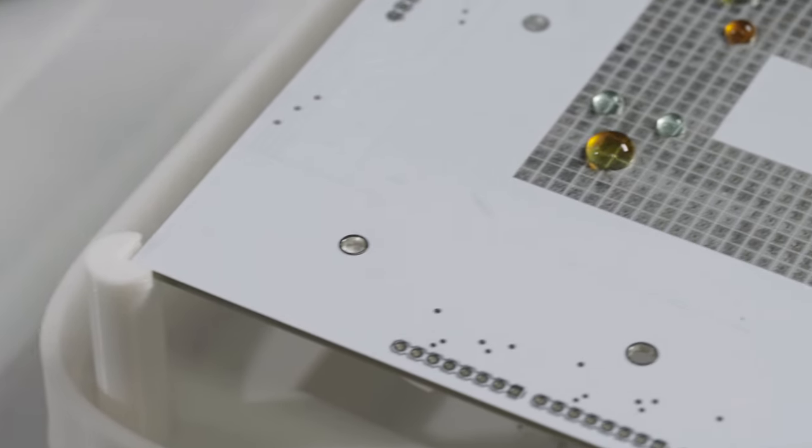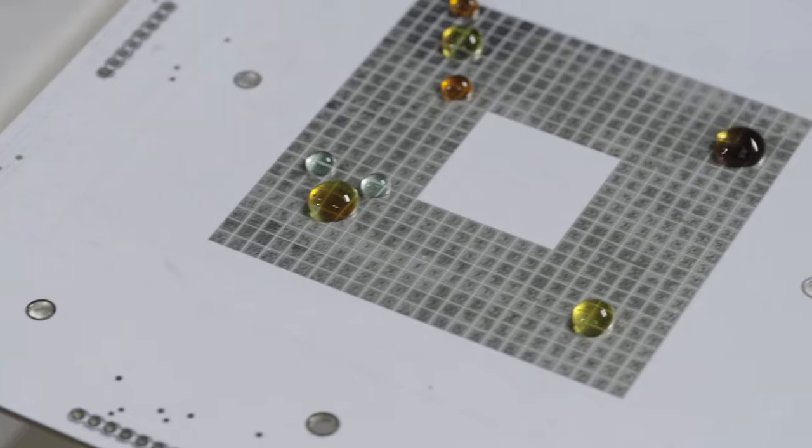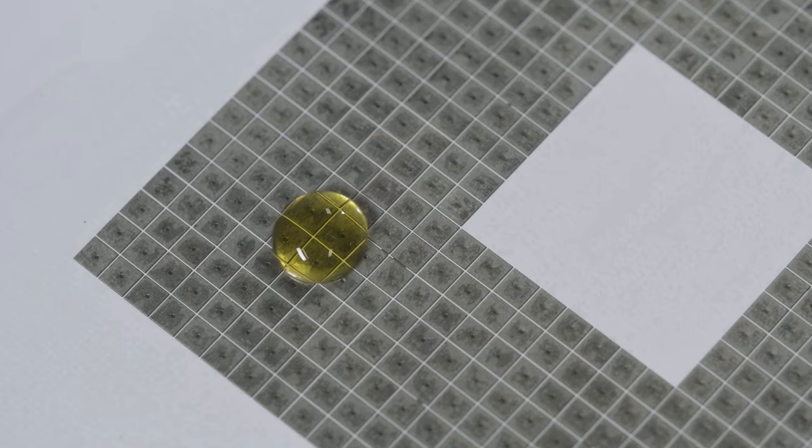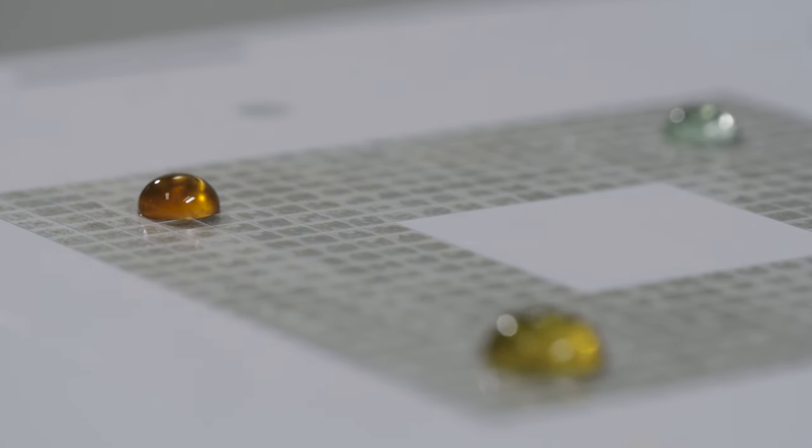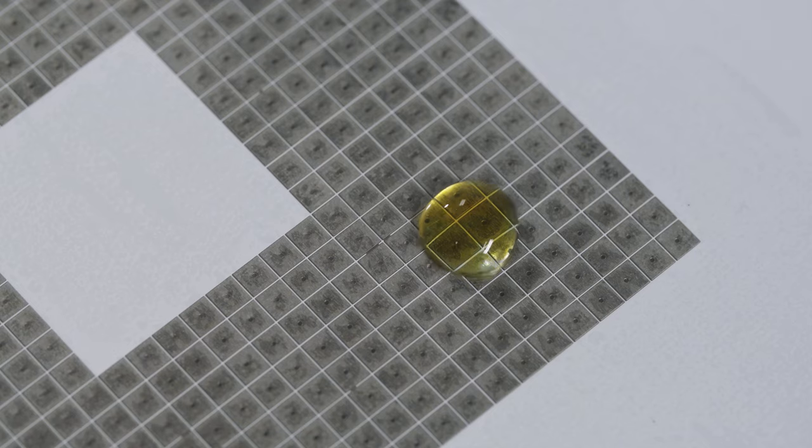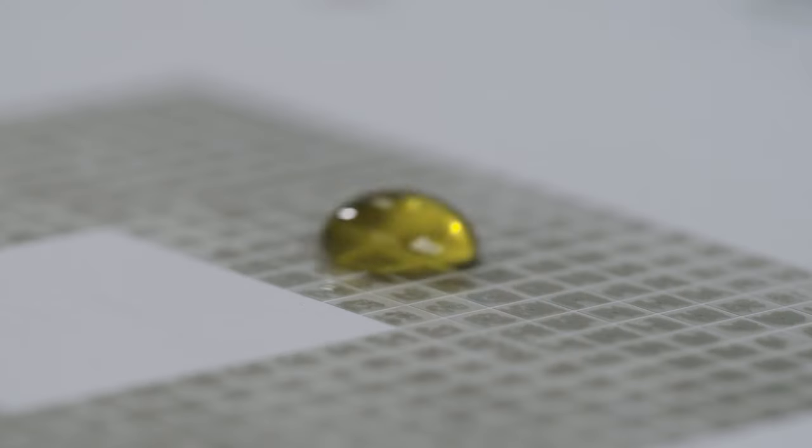So we have been developing a low cost lab-on-a-chip technology based on a physical principle called electrowetting, where we use electric fields to move, merge, stir, and analyze tiny biological samples.